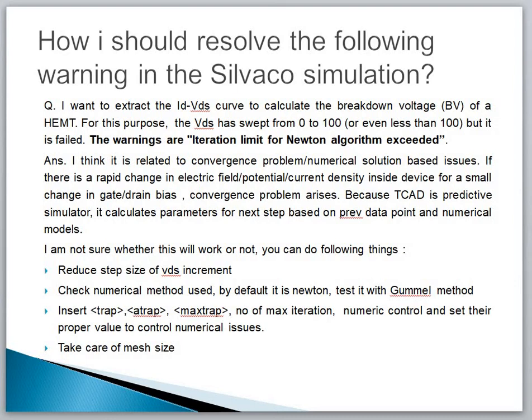Second, check the numerical method used. By default it is Newton. Test it with the Gummel method — if you are not defining any method statement it will automatically use Newton method, so test it with the Gummel method. Third, insert trap, atrap, and maximum trap — along with the number of maximum iterations — in the numeric control and set their proper values to control numerical issues. Fourth, take care of mesh size. To summarize: change the meshing in the county region as well as the XY region; make gradual changes in the VDS voltage; define the Gummel method in the code; and insert trap, atrap, and maximum iteration values for numerical control.